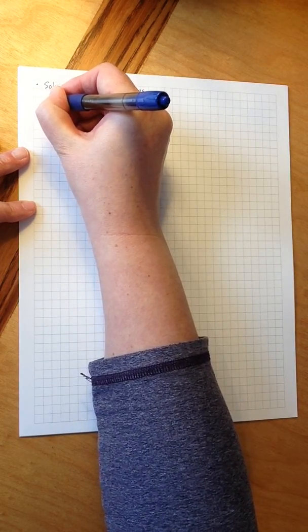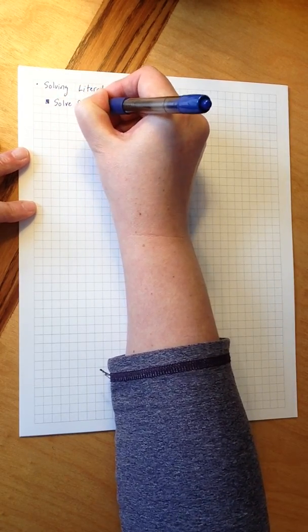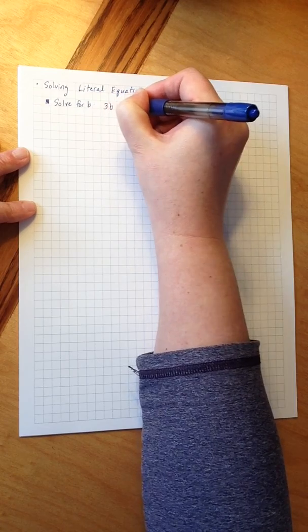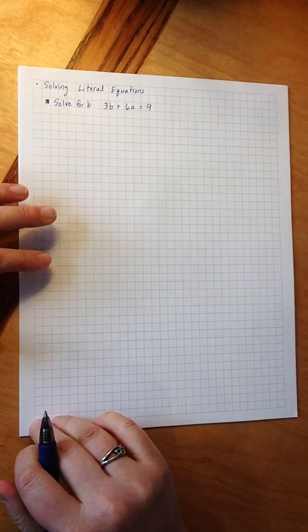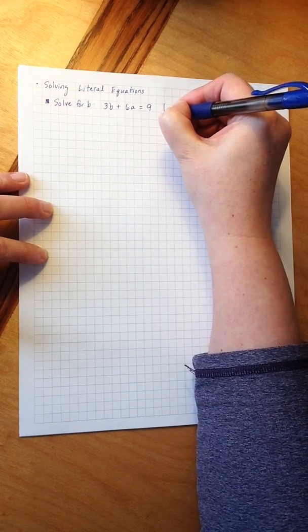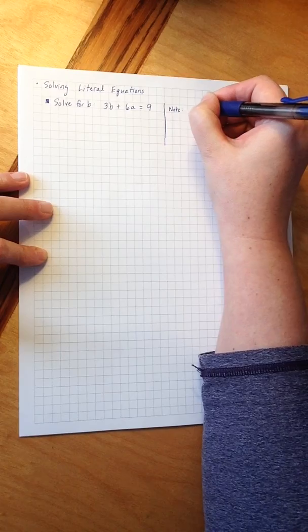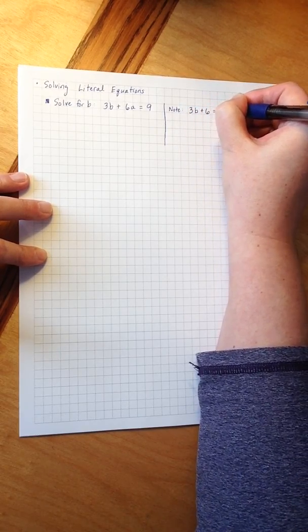Our first example is we're going to solve for b in the equation 3b plus 6a equals 9. To help us with this, we're going to do a related problem, which I'm going to call a note over here, in which we solve the equation 3b plus 6 equals 9.